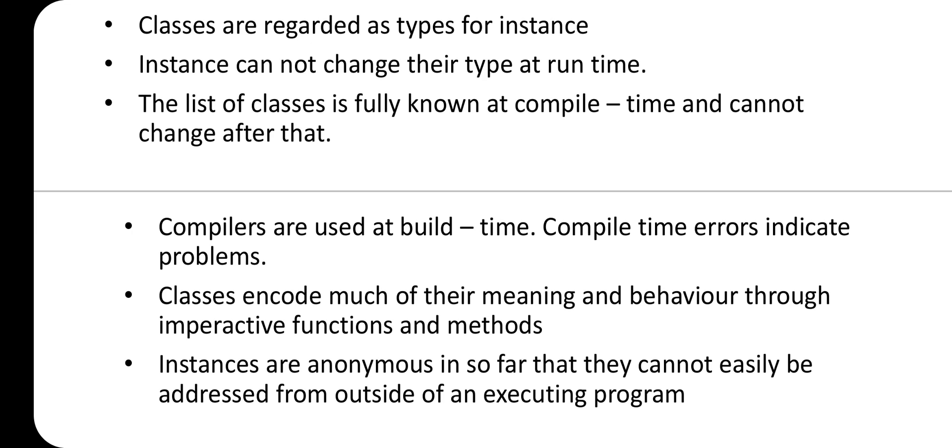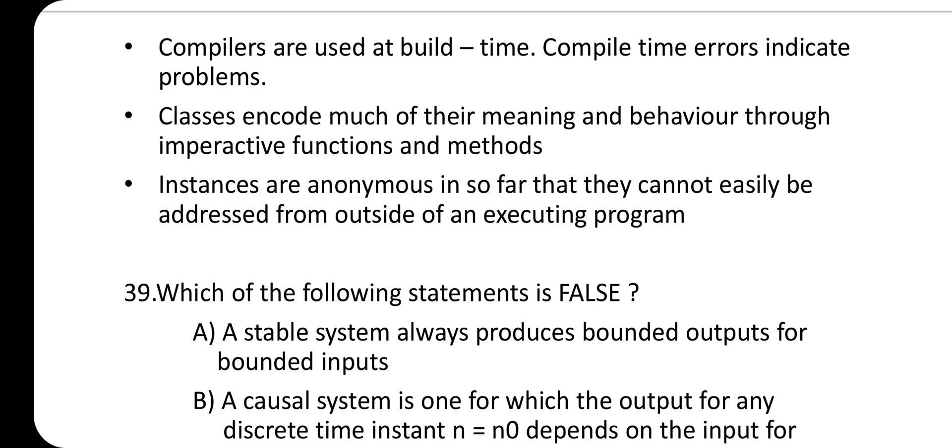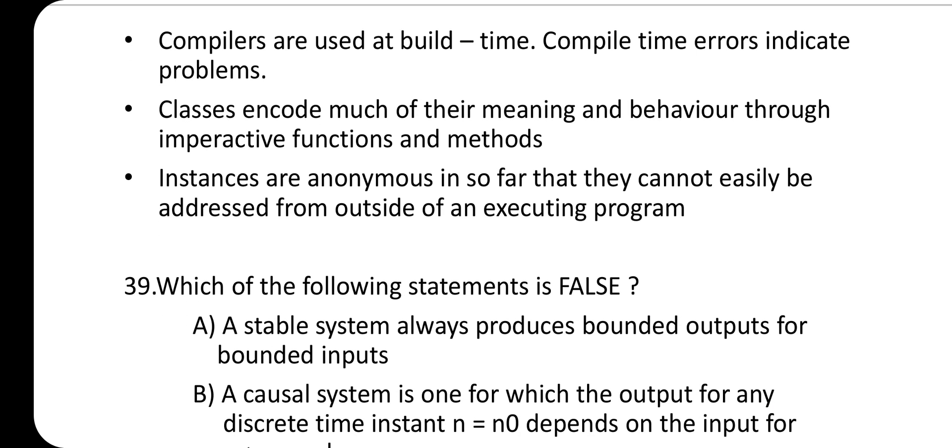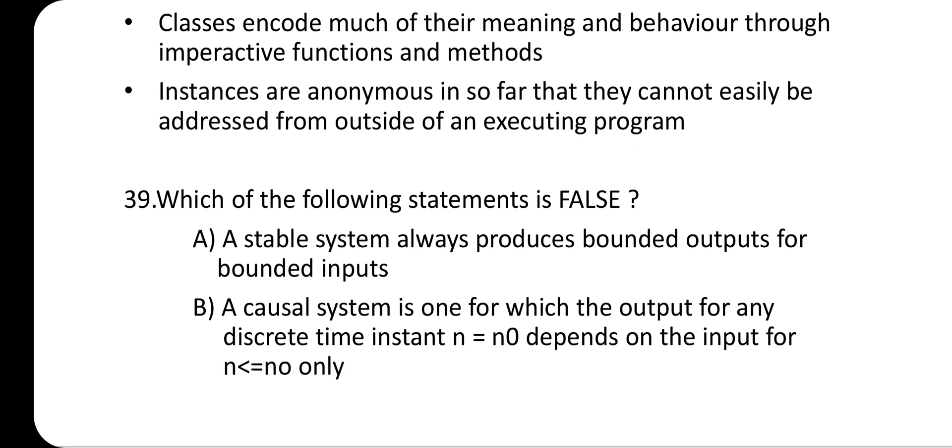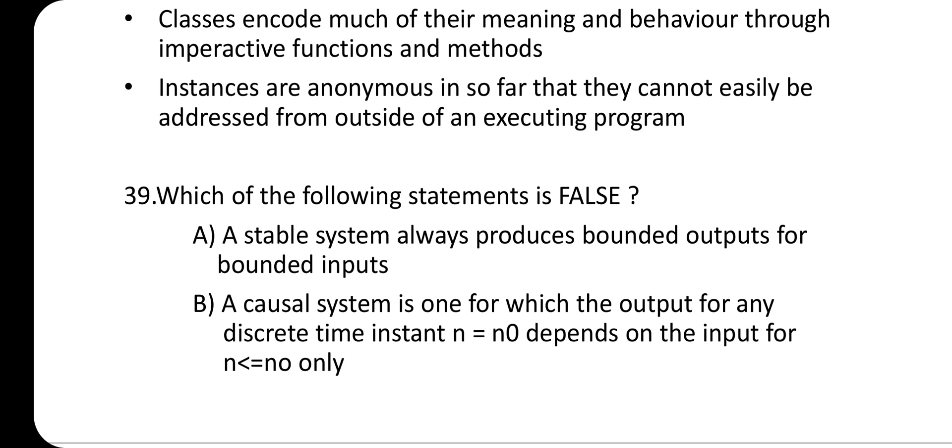Objects of object-oriented programming: classes are regarded as types for instances. Instances cannot change their type at runtime. The list of classes is fully known at compile time and cannot change after that. Compilers are used at build time; compile-time errors indicate problems. Classes encode their meaning and behavior through imperative functions and methods. Instances are anonymous in that they cannot easily be addressed from outside an executing program.